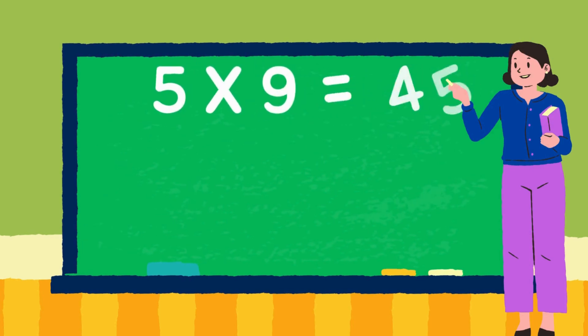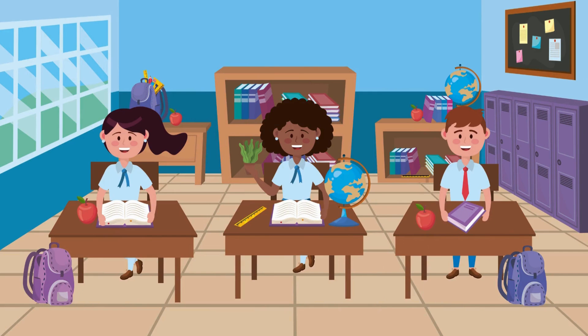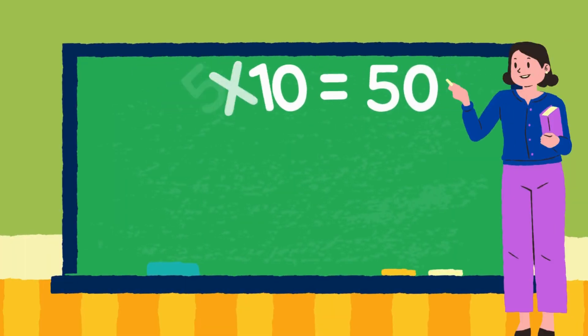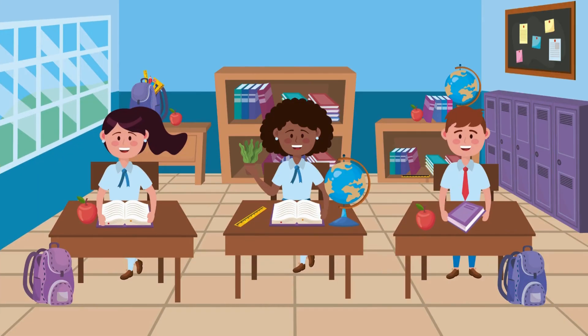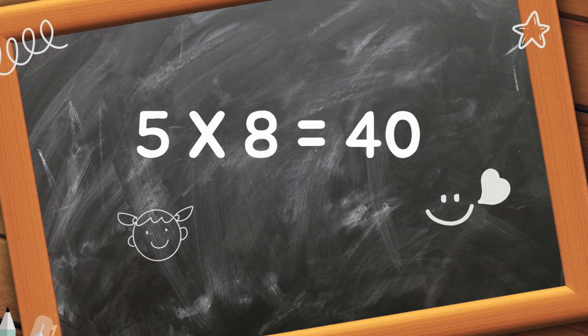5 nines are 45. 5 tens are 50. 5 ones are 5, 5 twos are 10, 5 threes are 15, 5 fours are 20, 5 fives are 25, 5 sixes are 30, 5 sevens are 35, 5 eights are 40, 5 nines are 45.